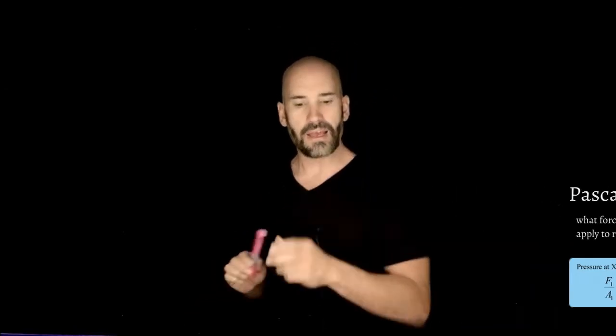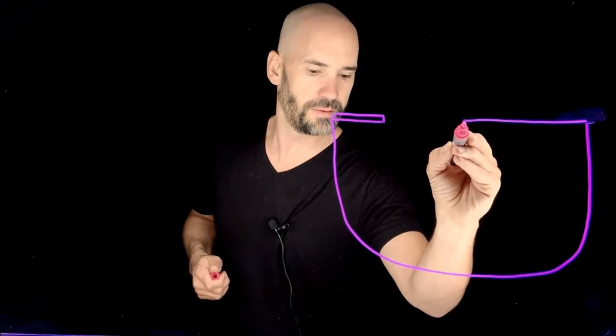So I want to imagine that we have some sort of situation where we have a little kind of cylinder here, and then a tube that goes out here. Let's make this a little bit more broad here.